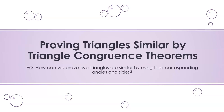For today's notes I'm going to be going over how to prove triangles similar by the triangle congruence theorems. These are similar to how we prove triangle congruence, but remember length doesn't need to be the same. Our essential question is: how can we prove two triangles are similar by using their corresponding angles and sides?